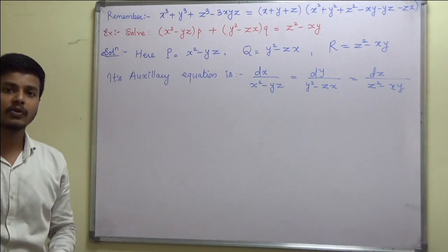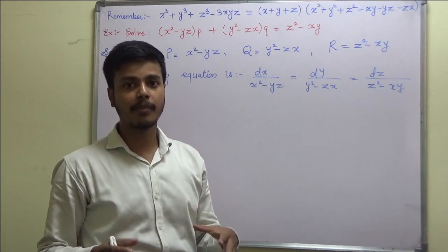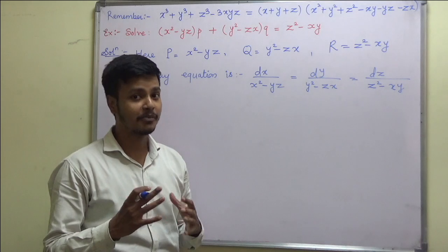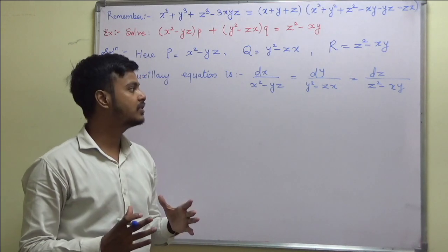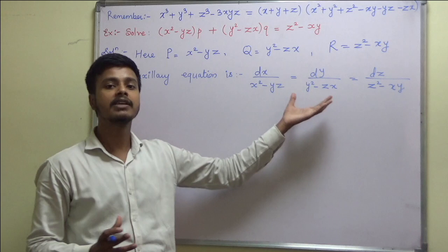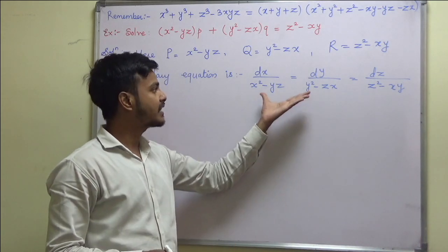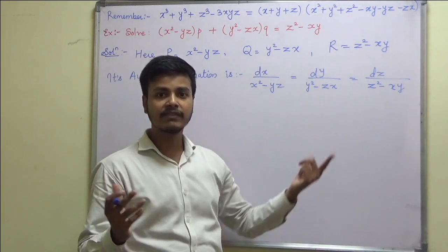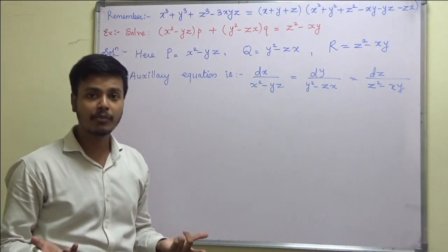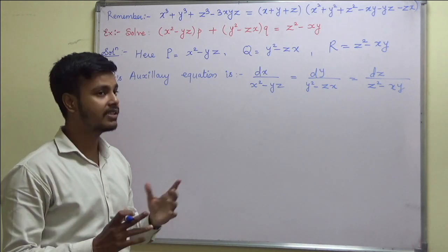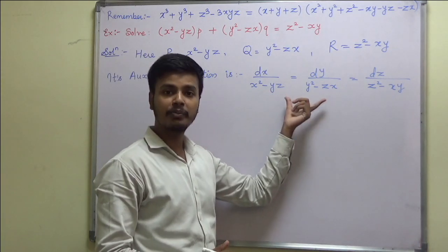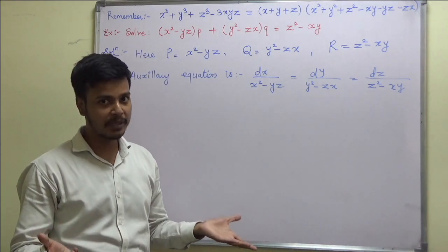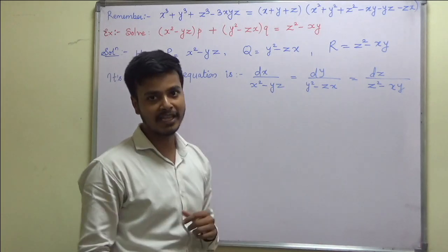After writing down the auxiliary equation, we have to think over it and do some brain exercise. We should think about which method can be applied. Method of grouping — is it applicable? If I take any of the ratios, nothing will cancel out and I won't be able to integrate. So method of grouping is not possible, and therefore this is a problem of method number 3.